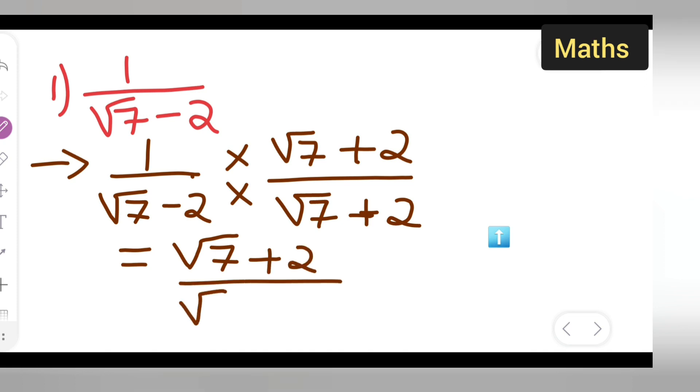This is equal to, see, 2 times 2 is 4. Minus 4, minus and plus is minus. Next it will be root 7 plus 2 upon what is root of 49. Root of 49 is nothing but 7, so it will be 7 minus 4.